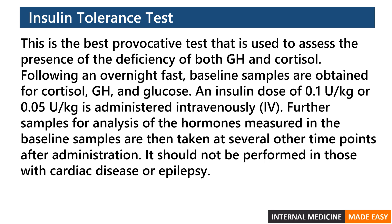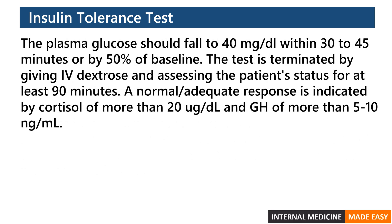Following an overnight fast, baseline samples are obtained for cortisol, growth hormone, and glucose. An insulin dose of 0.1 or 0.05 units per kilogram is administered intravenously. Further samples are taken at several time points after administration. It should not be performed in those with cardiac disease or epilepsy. The plasma glucose should fall to 40 mg per deciliter within 30 to 45 minutes or by 50% of baseline. The test is terminated by giving IV dextrose and monitoring the patient for at least 90 minutes. A normal response is cortisol of more than 20 micrograms per deciliter and growth hormone of more than 5 to 10 nanograms per milliliter.